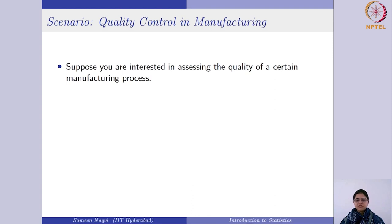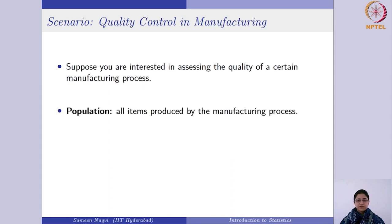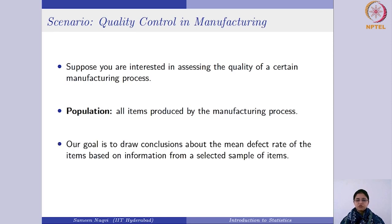Suppose you are interested in assessing the quality of a certain manufacturing process. In this case, the population would be all the items which are manufactured there. Since you cannot obtain data from each and every item — for example, if you are interested in the mean defect rate, you cannot check each item — you can instead collect a representative sample from that population and draw conclusions based upon that sample. Once you have the sample, you can answer this question in three different ways.